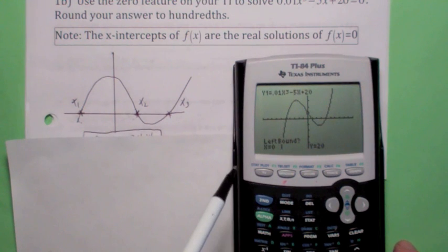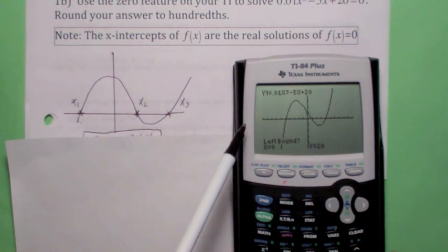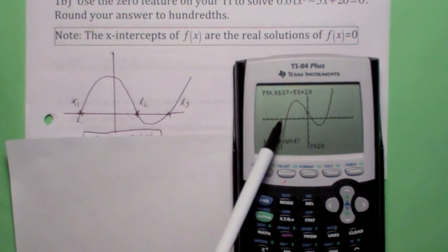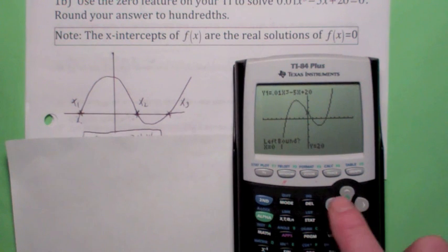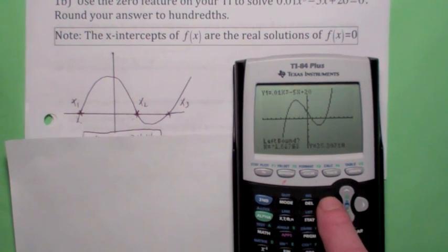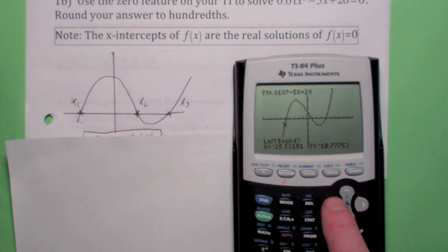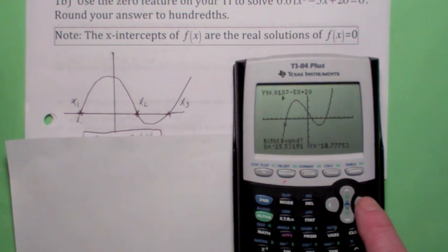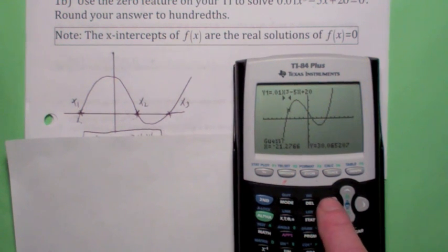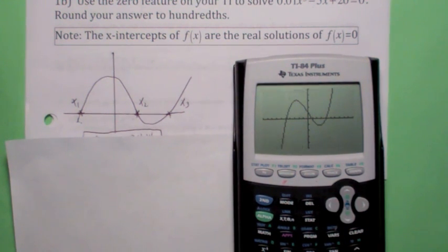And it's a 3-step process. We're going to find this first x1 by using the arrow keys. We move the arrow key to the left so you get to the left of it. Hit enter once. Move the right arrow key to the right of it, hit enter a second time. And now, get close to it, hit enter a third time. It's a 3-step process.